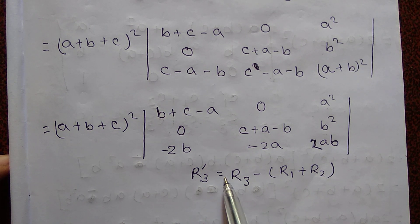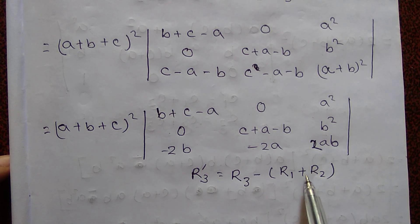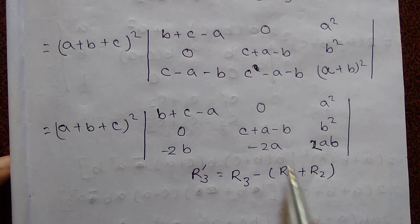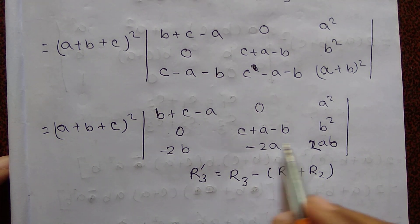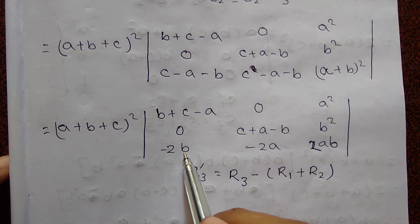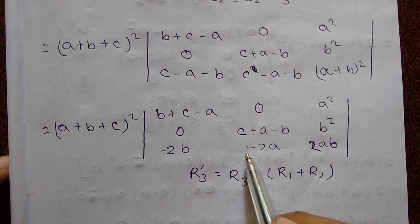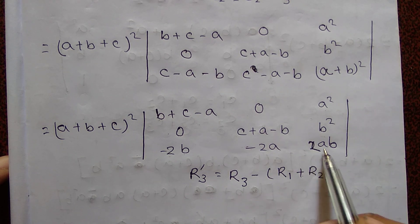Then we perform the operation R3 prime equal to R3 minus R1 plus R2. R3 prime becomes: minus 2b, minus 2a, 2ab.